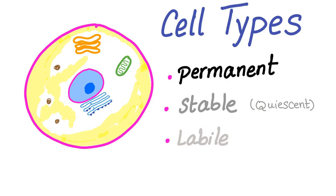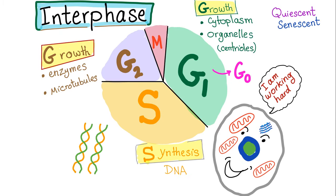I have a video on my channel called cell types. We've talked about three cell types: permanent, stable, and labile. Stable is the same thing as quiescent. What is a permanent cell? A permanent cell is a cell that just remains in G0. It's just permanent. It's not going to divide. It's over.